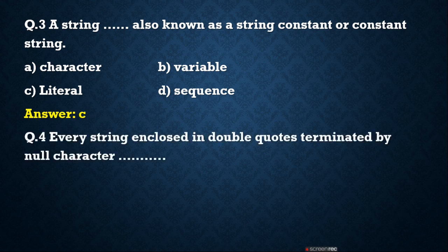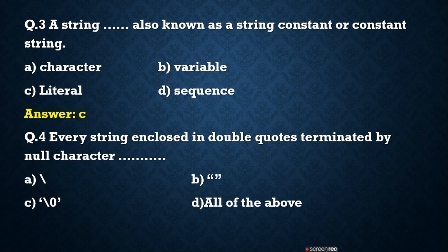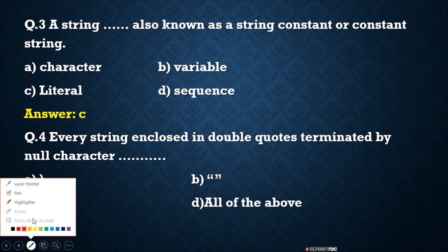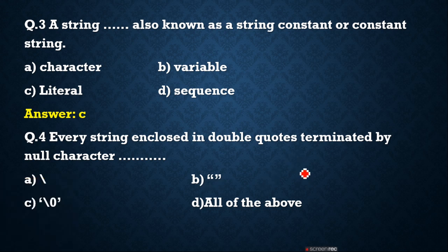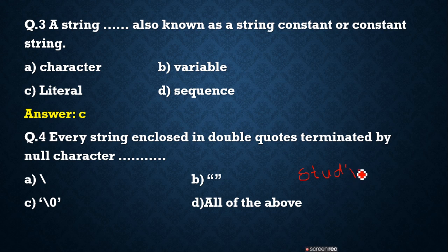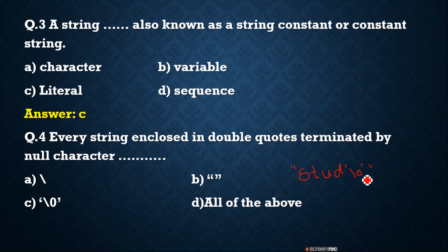Every string enclosed in double quotes is terminated by null character. Which of the following is a null character? The answer is C, \0 is a null character. When you store a name like 'stud', S is stored at one location, T at the second, U at the third, and D at the last. Every string ends with \0. No need to write \0 every time because by default it is attached to the string.